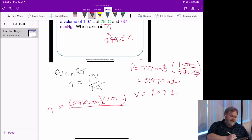Our pressure is 0.970 atmospheres times our volume of 1.07 liters. Now we're going to divide that gas constant.